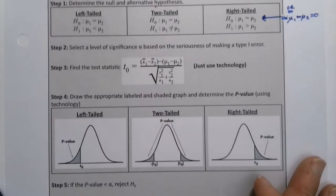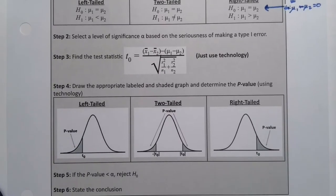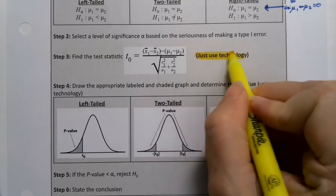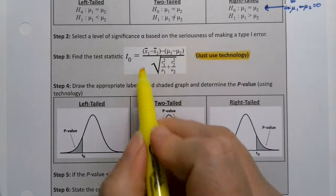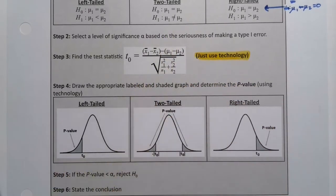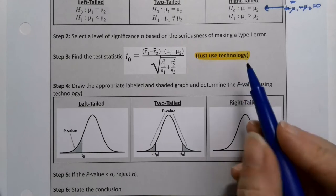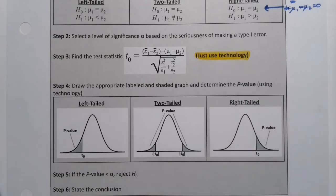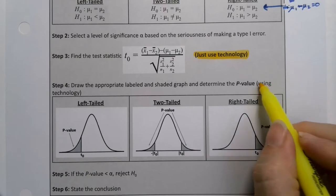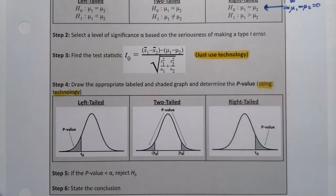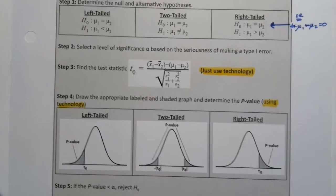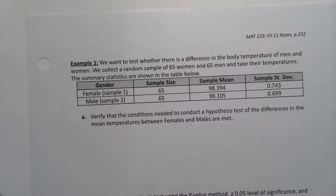Then you change your alternative hypothesis accordingly and do the rest. Just as in section 11.1, we're not going to compute this formula by hand — it's too much of a pain and there's no real reason for it. We're going to make either the TI-84 or StatCrunch do it for us, since we need those values to find the p-value anyway. Technology will do the heavy lifting when we run hypothesis tests.